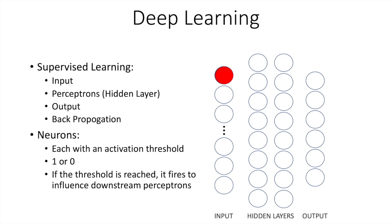In contrast to supervised learning, unsupervised learning uses machine learning algorithms to analyze and cluster unlabeled datasets. This approach allows for discovery of hidden patterns without human intervention. An example would be a system that can cluster images of cats in a group when you input various images of different animals — the system was never taught what a cat is, but is able to categorize likes with likes in an unsupervised manner.